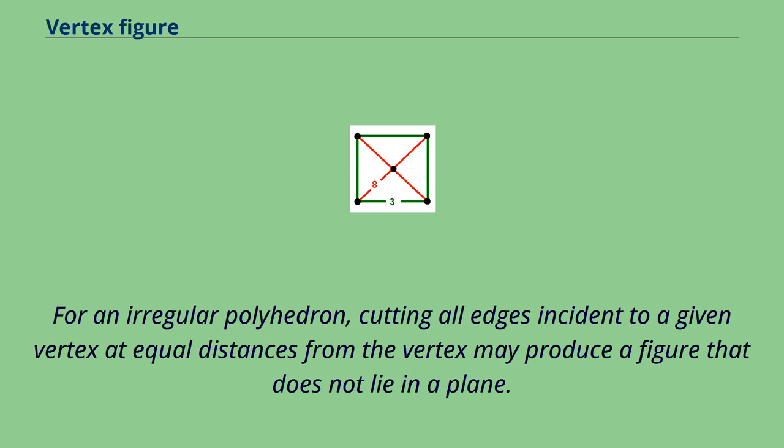For an irregular polyhedron, cutting all edges incident to a given vertex at equal distances from the vertex may produce a figure that does not lie in a plane.